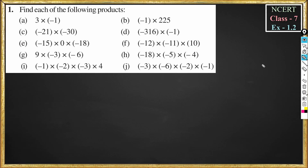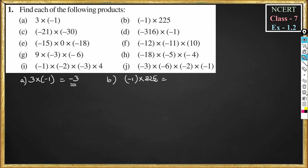Exercise 1.2, question number one: find each of the following products. Part a: 3 into minus 1. We know that plus into minus is minus, so 3 into 1 is 3, and the answer is minus 3. Part b: minus 1 into 225. Minus into plus is minus, so 1 into 225 is 225, and the answer is minus 225.